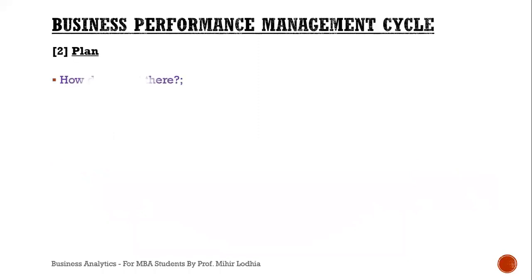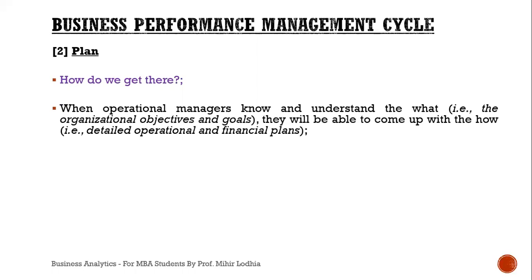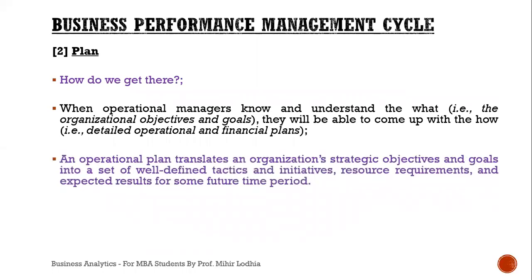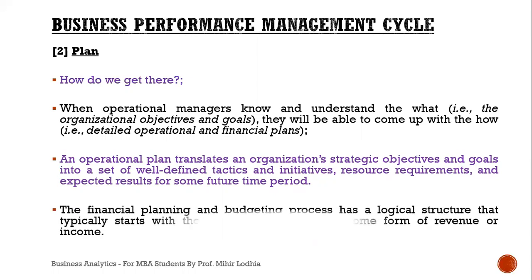Second, plan — the question to answer here is: how do we get there? When operational managers know and understand the 'what' — meaning organizational objectives and goals — they will be able to come up with the answer 'how,' through a detailed operational or financial plan. An operational plan translates an organization's strategic objectives and goals into a set of well-defined tactics and initiatives, resource requirements, and expected results for a future time period. The financial planning and budgeting process typically starts with tactics that generate some form of revenue or income.